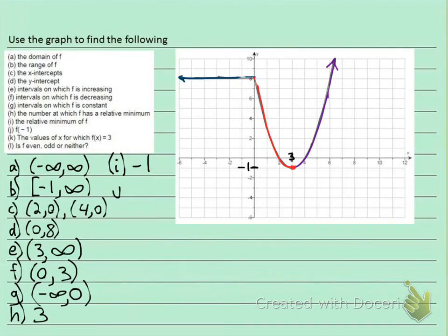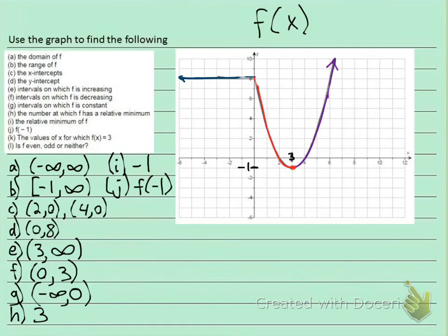Part J: what is f(-1)? Remember, f(x) is really your y value. So if they want f(-1), negative 1 is my x. I look on the x-axis at negative 1, then find the graph — looking down I see nothing, looking up the graph is at 8. So f(-1) = 8.